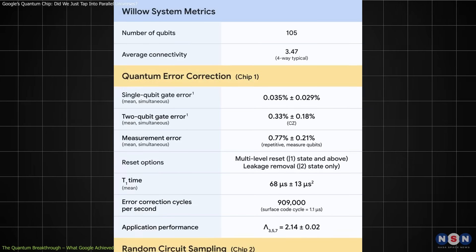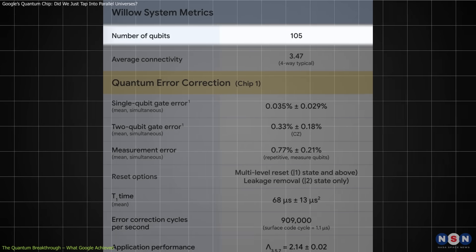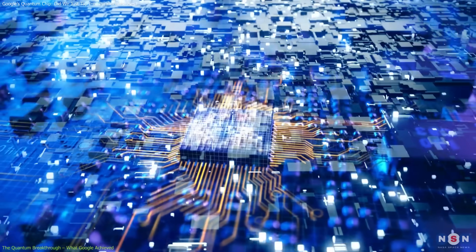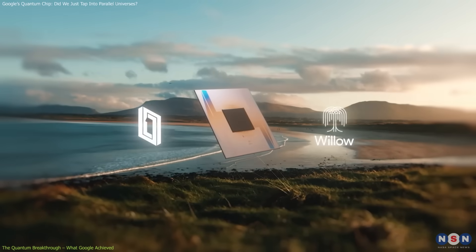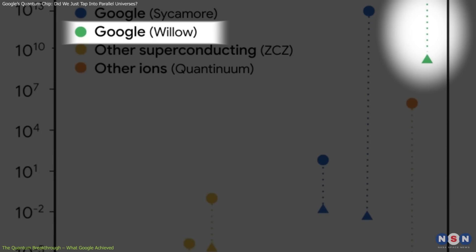This time, Willow's leap to 105 qubits makes its achievement exponentially more powerful. Every additional qubit doubles the processing power. So Willow isn't just twice as good. It's orders of magnitude ahead of its predecessor. And there's more.